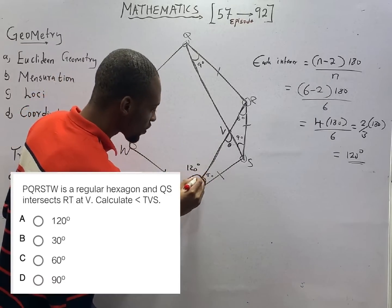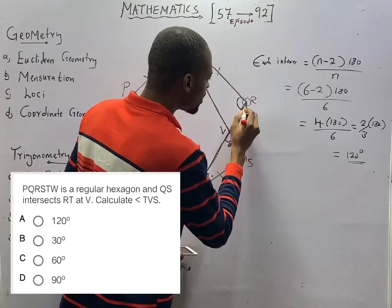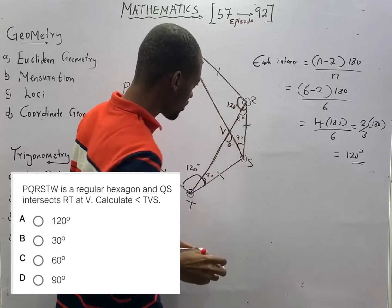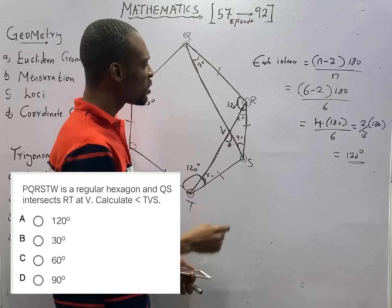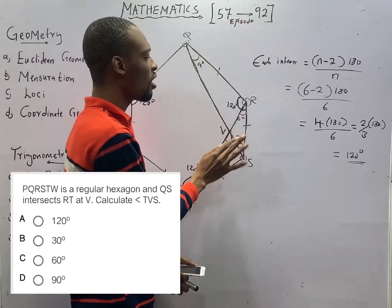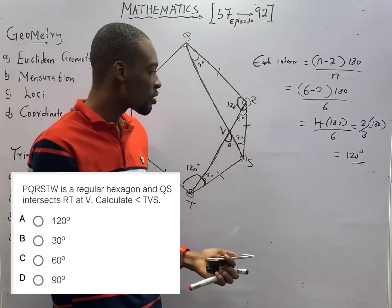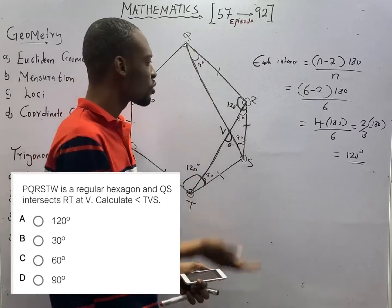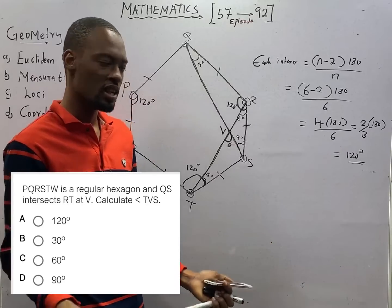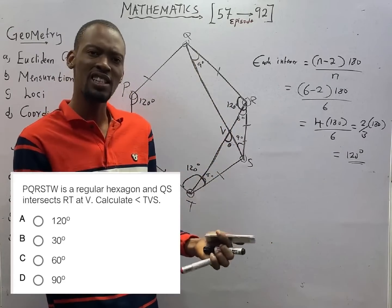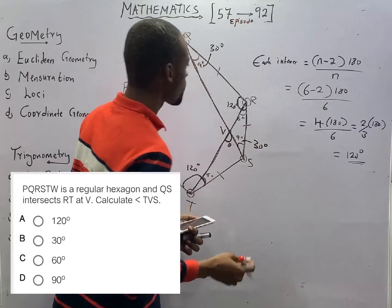Since every interior angle is 120 degrees, angle B is 120 degrees. For the isosceles triangle with a 120-degree angle, the remaining two angles must sum to 60 degrees. Since they are equal, each is 30 degrees. So the two base angles of that isosceles triangle are each 30 degrees.